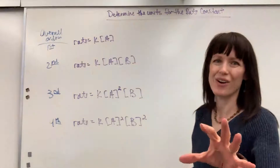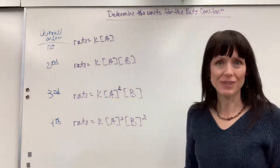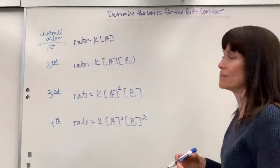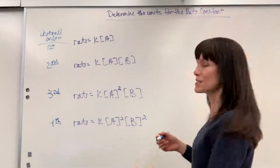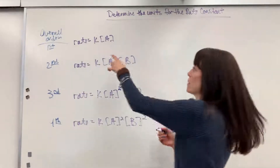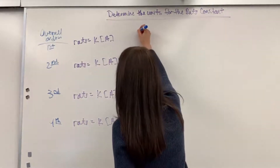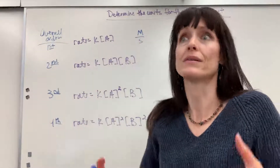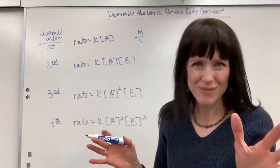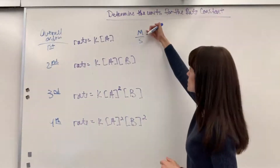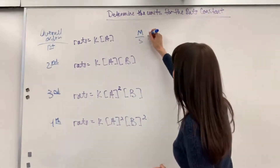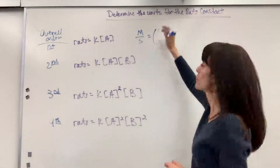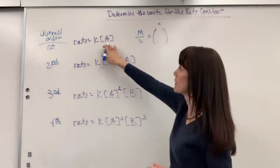Now for units: I have students work the units separately from the numbers. Rate always has units of concentration over time — molarity per second, though it could be per minute or per hour. Set up the equation: molarity per second equals some unit for K times the concentration terms, where brackets always indicate molarity.